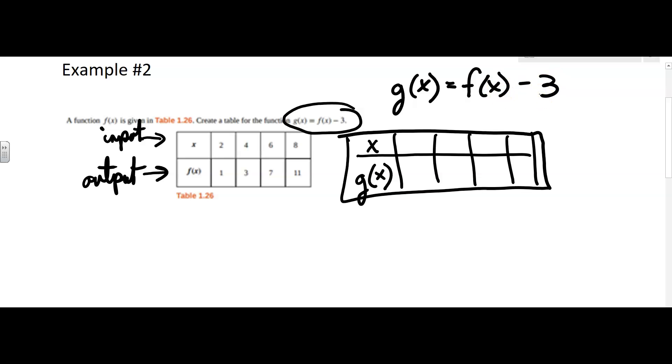So I'll take the first one and try to show it to you a little bit clearer, writing it out. Let's say our first input here is 2. So g of 2 would equal f of 2 minus 3.